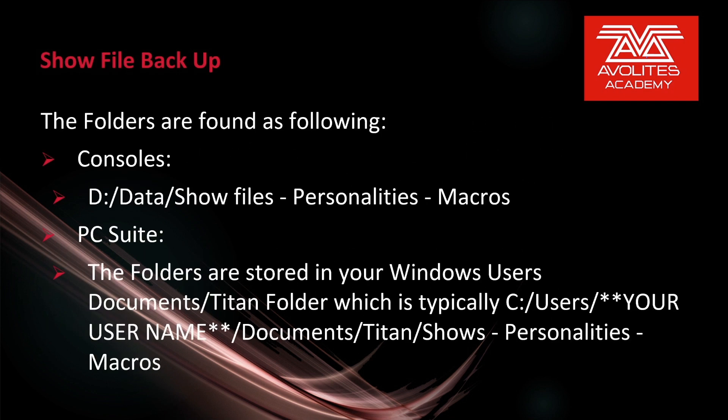The folders are found in the following locations. On consoles, in the D drive, slash data, slash show files, personalities, or macros. Show files is always where show files are. Personalities is where you have personalities you either created on the console or installed yourself. So if you were given a personality that is not in the library, you would put it in that folder to see it in the console — restart and you'd be able to see it. Macros is where you would install user-created macros.